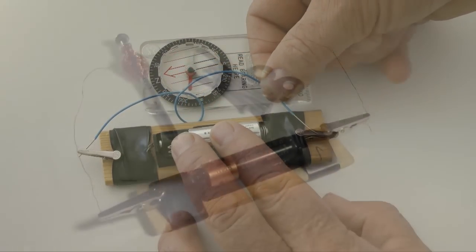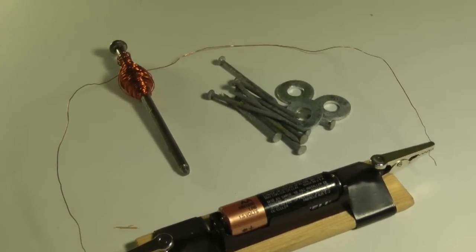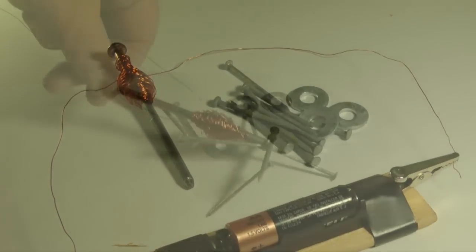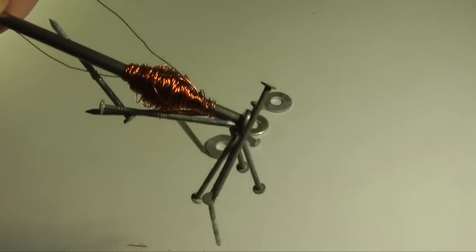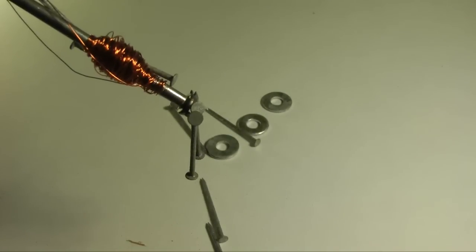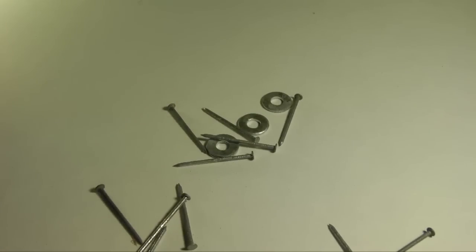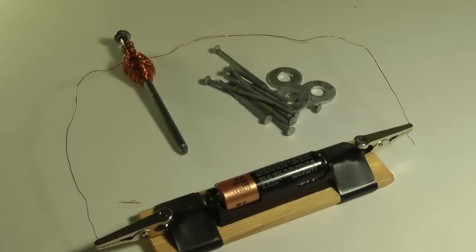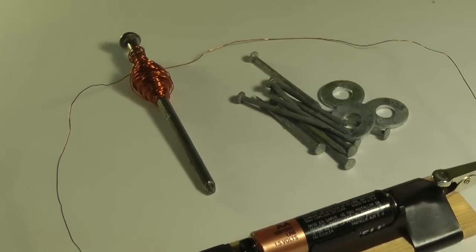When current flows through a coil wrapped around an iron core, the iron core becomes magnetized. This is an electromagnet. Disconnect the battery and the magnetic field collapses. The ability to switch this magnetic field off and on creates some interesting possibilities.